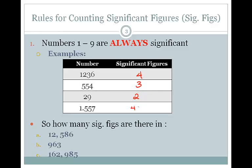Pause the video lecture and figure out how many significant figures are in each of these numbers. You should have gotten 5, 3, and 6.